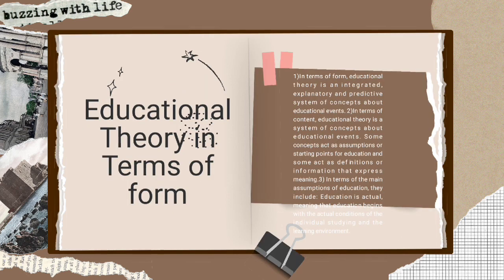Now we are going to educational theory in terms of form. 1. In terms of form, educational theory is an untouched, explanatory, and predictive system of concepts about educational events.